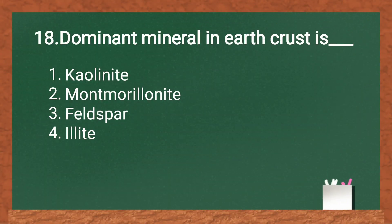Dominant mineral in the earth crust: options are Kaolinite, Montmorillonite, Feldspar, and Illite. The answer is feldspar. Feldspar is the dominant mineral in the earth crust.